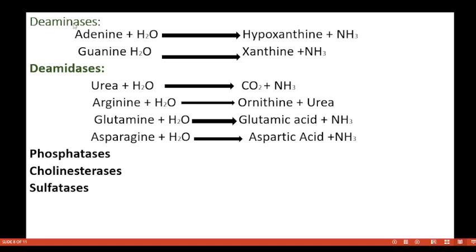Deaminases convert adenine plus H₂O to hypoxanthine and ammonia, and guanine plus H₂O to xanthine and ammonia. Deamidases catalyze removal of an amide group — for example, urea plus H₂O is converted to CO₂ and ammonia; arginine plus H₂O to ornithine and urea; glutamine plus H₂O to glutamic acid and ammonia; and asparagine plus H₂O to aspartic acid and ammonia.